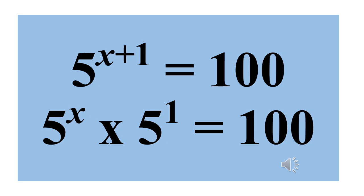So 5 raised to the power x plus 1 — using the law of exponents, with x plus 1 as the exponent, we can split it to 5 raised to the power x times 5 raised to power 1. If you simplify 5 raised to power x times 5 raised to power 1 using the law of exponents, it will give us 5 raised to power x plus 1.